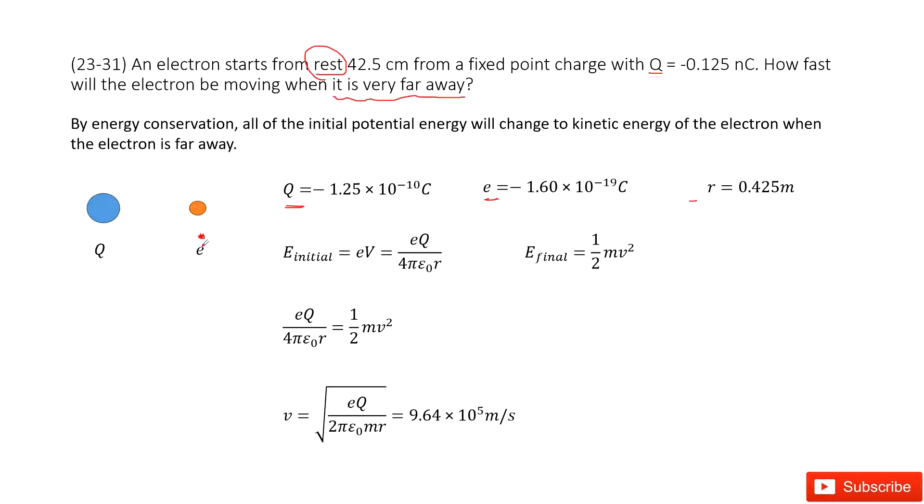So you can write the fixed point charge V at this location. And the V is Q over 4πε₀r times the electron charge e. So we can get the initial potential energy there.